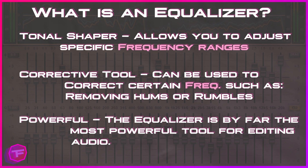An equalizer is also known as a tonal shaper. What that means is it allows you to adjust specific frequency ranges on a specific track. So you can take a vocal recording or a music recording and adjust specific frequency ranges within that recording. It's also used as a corrective tool — if you have certain noises within a track that you want to eliminate or help remove, you can use an equalizer to adjust the specific frequency ranges around those noises.